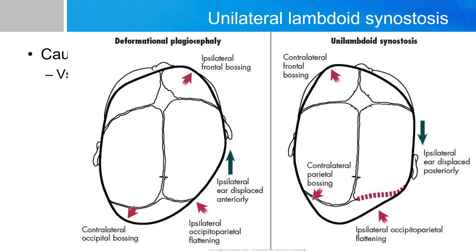Just by looking at the infant, it is quite easy to get them confused. But there are a few major differences to tell them apart, predominantly by both history and morphology. Morphologically, there are two distinctive features. The ear displacement in unilateral lambdoid synostosis is posteriorly displaced, versus anteriorly displaced for positional plagiocephaly.